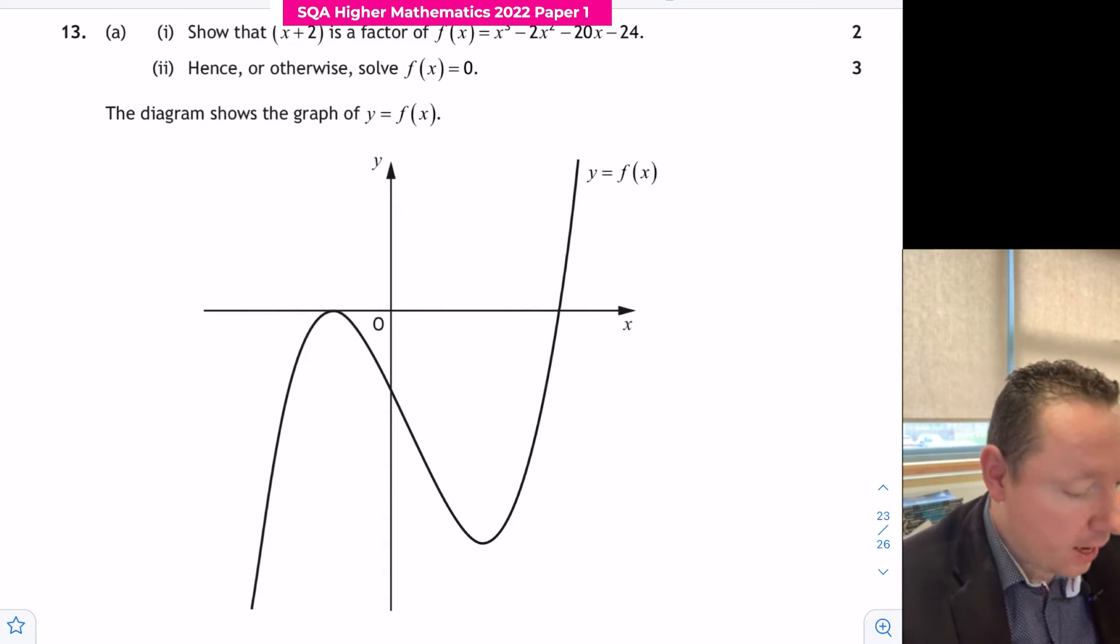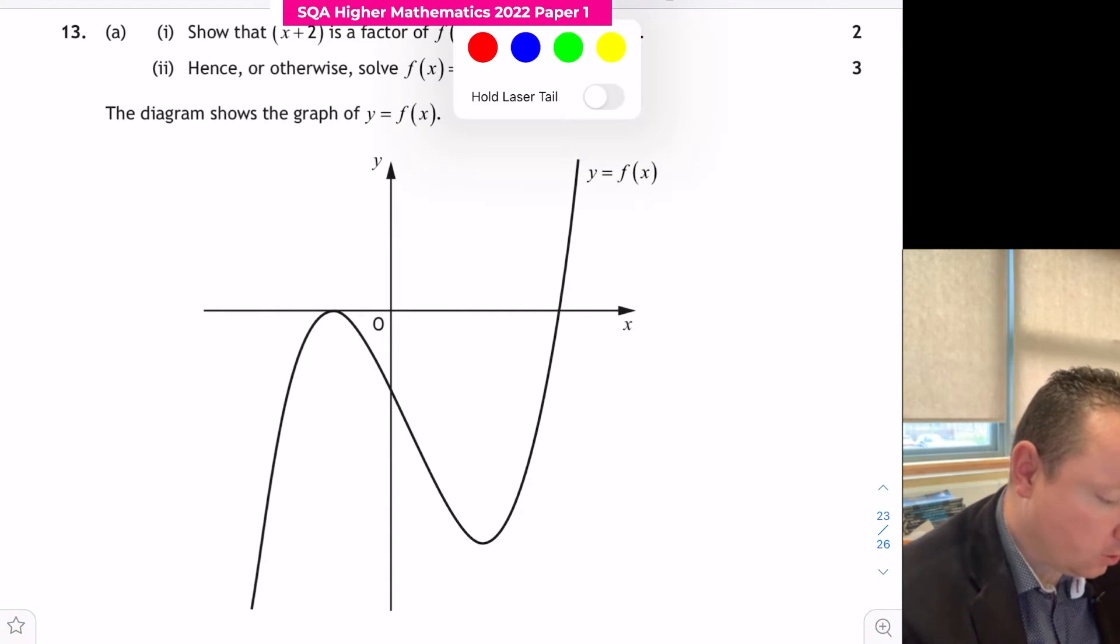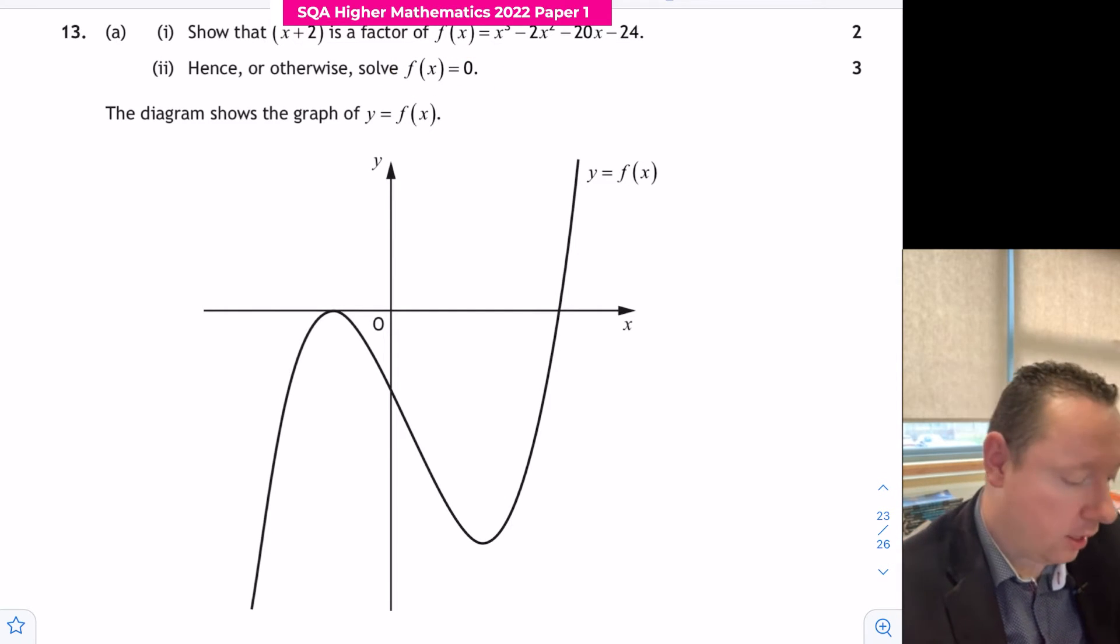Hi, SQA Higher Maths 2022 Paper 1 Question 13. Part A: show that x plus 2 is a factor of x cubed minus 2x squared minus 20x minus 24. Part 2: then solve f of x equals 0.